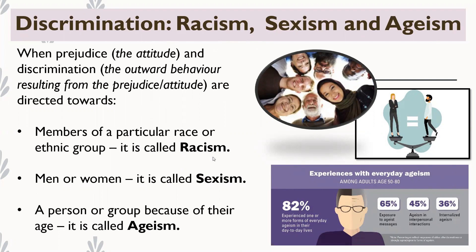You need to know what each of those three isms are, and if given a scenario, you need to be able to identify whether sexism, racism, or ageism is happening.